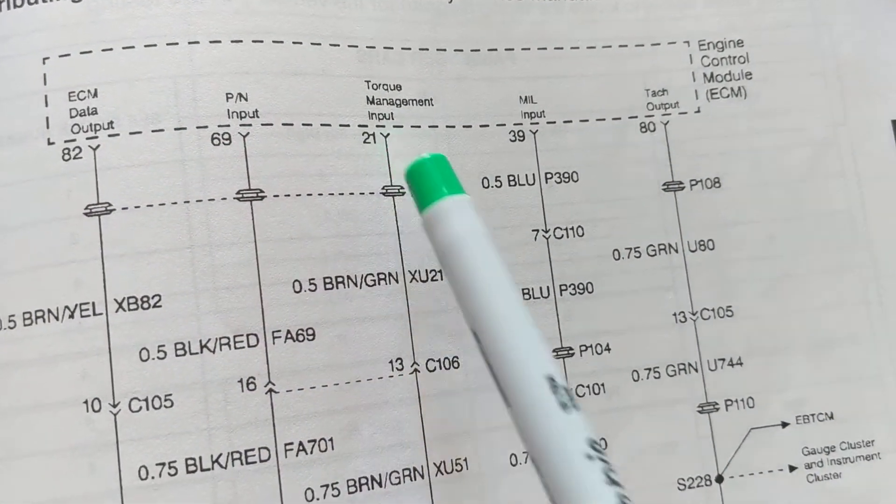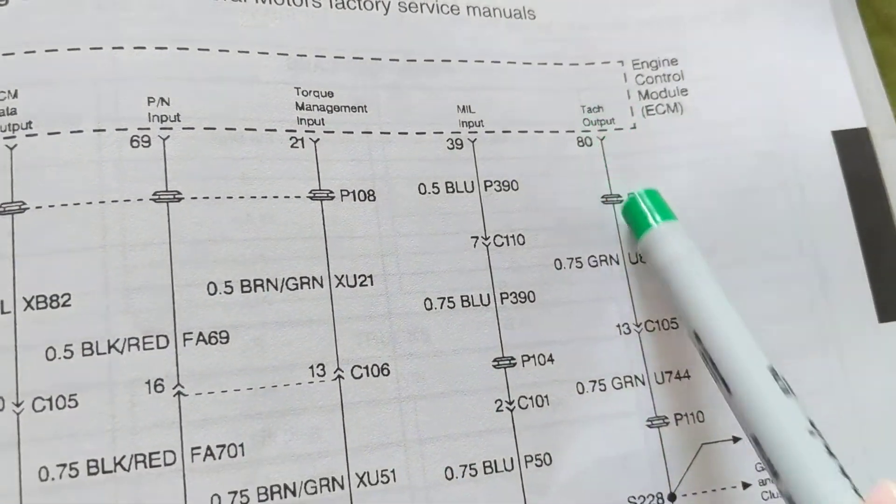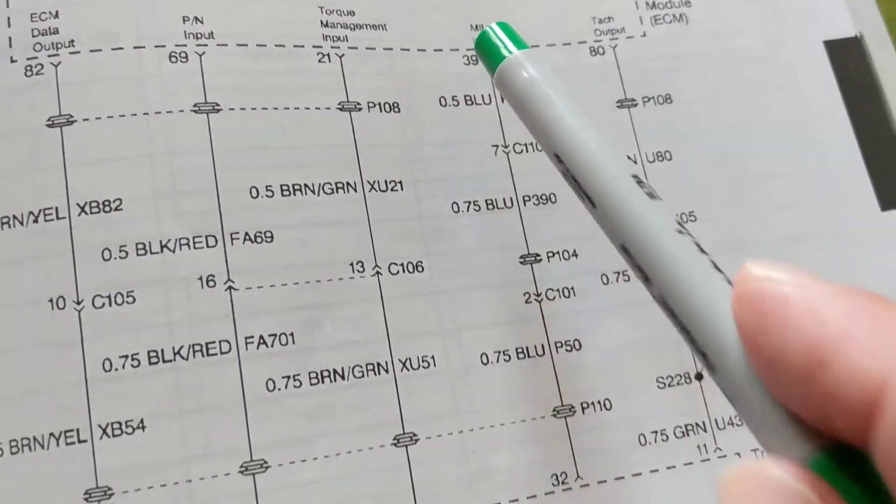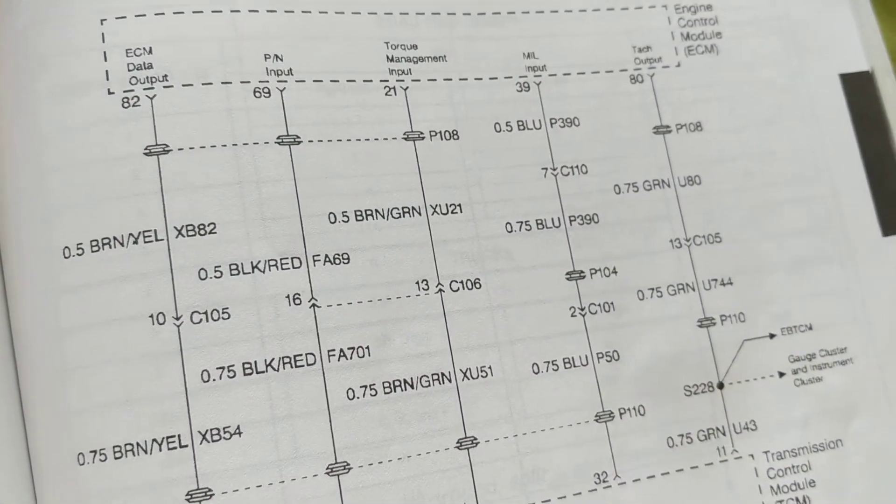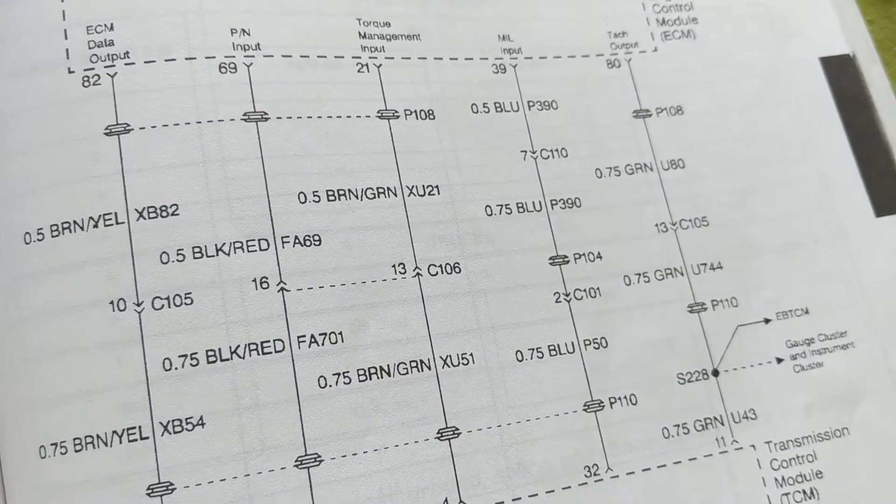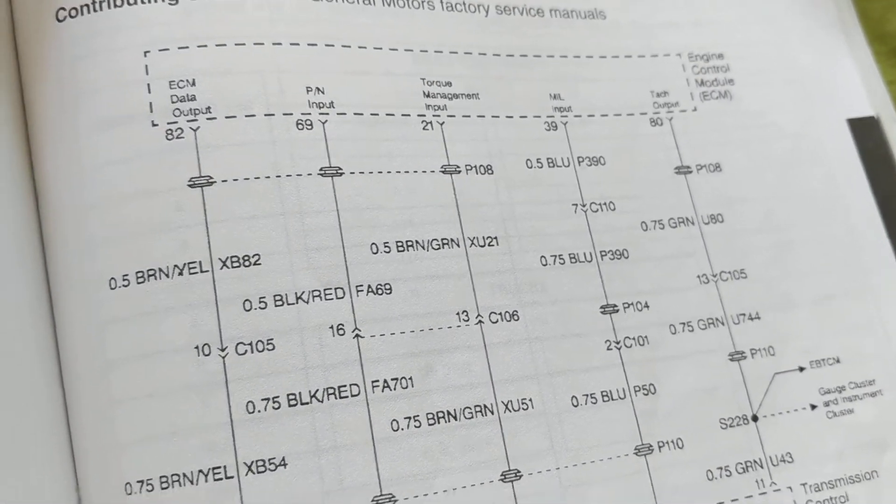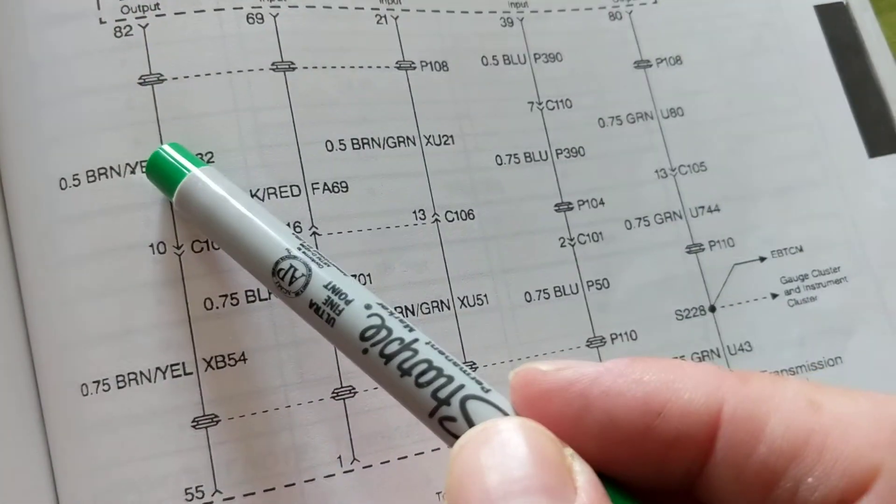Therefore this one over here, this is the standard ECM, or like a PCM. Wherever you see input, that means it's an input to this one. Wherever you see it's an output, that means it's an output to something else. So the engine control module is communicating to the transmission control module back and forth. They're going, okay, controlling the transmission, the gear shift.